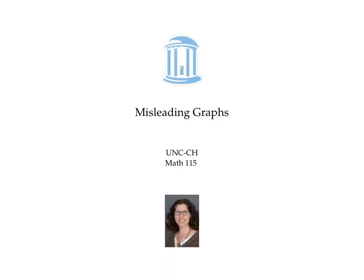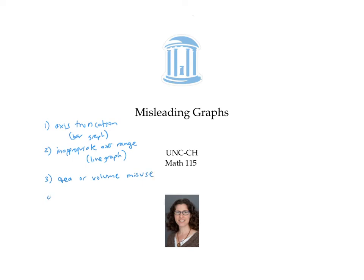In this video, we saw a few ways to make misleading graphs. Axis truncation for a bar graph can mislead the viewer into seeing more change than there really is. An inappropriate choice of axis range can hide a trend that might be of interest. Graphs that use area or volume to represent quantity need that area or volume to be proportional to the quantity represented — otherwise it's a misleading use of area and volume. There are many other ways that graphs can be misleading, so please be a critical reader.